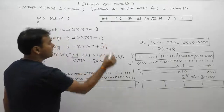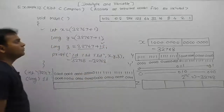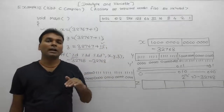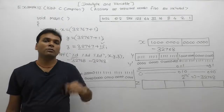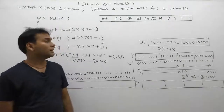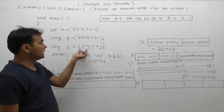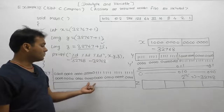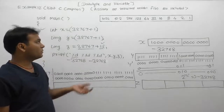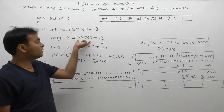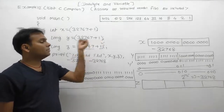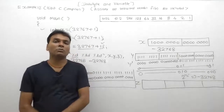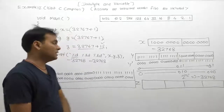Just because of the second operand being long — in any expression, the result depends on the higher range data type. In this case, integer vs long: the higher range is long, so the result is in the form of long. In the previous case, the first operand was integer and the second was also integer, so the result was in the form of integer.